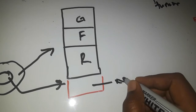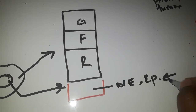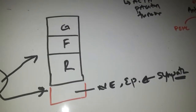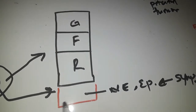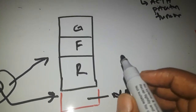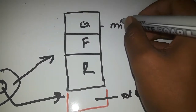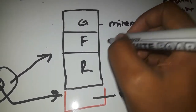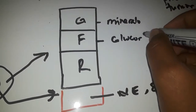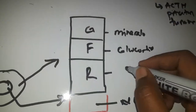The adrenal medulla secretes norepinephrine and epinephrine, and it's under control of the sympathetic nervous system. The adrenal cortex has three parts: zona glomerulosa secretes mineralocorticoids, zona fasciculata secretes glucocorticoids, and zona reticularis secretes androgens.